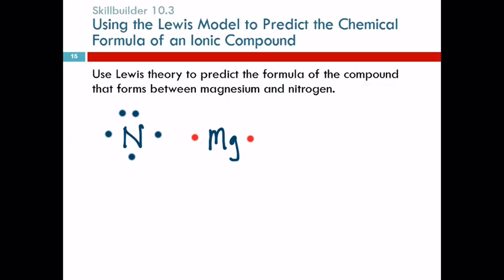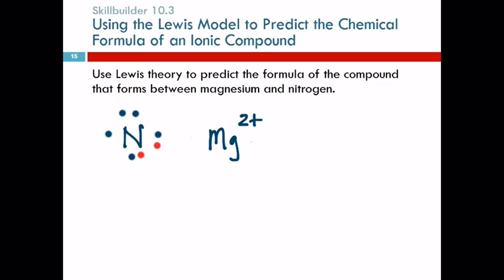Magnesium is trying to get rid of electrons, nitrogen is trying to get electrons. So the magnesium's like, hey, I need to get rid of these two electrons. The nitrogen's like, awesome, I want three though. Well, I only have two — will you take the two? Sure, that's better than nothing. So these two electrons get moved over to the nitrogen. Now the charge on magnesium is two plus. The charge on nitrogen is negative two — because it got two electrons from the magnesium.